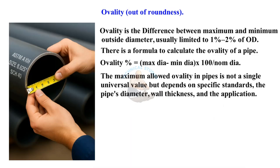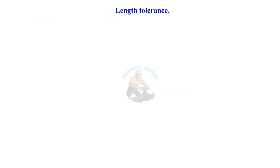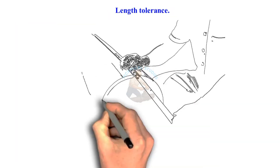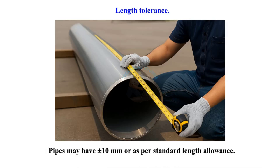The maximum allowed ovality in pipes is not a single universal value but depends on specific standards, the pipe's diameter, wall thickness, and the application. Regarding length tolerance, pipes may have plus or minus 10 millimetres, or as per standard length allowance.